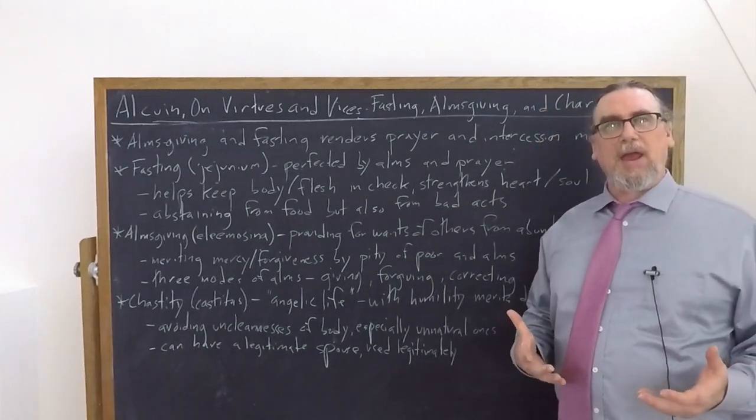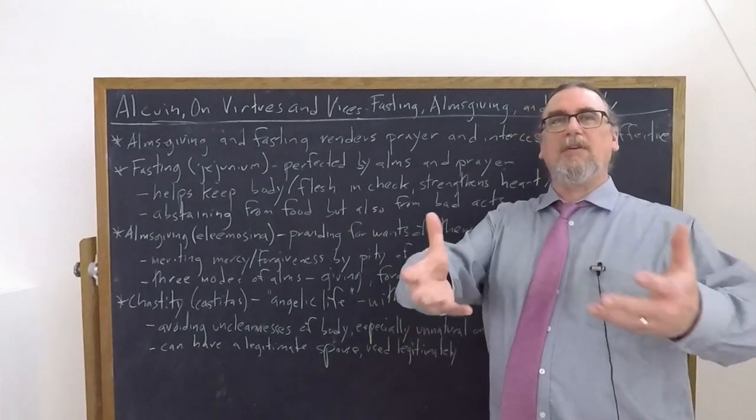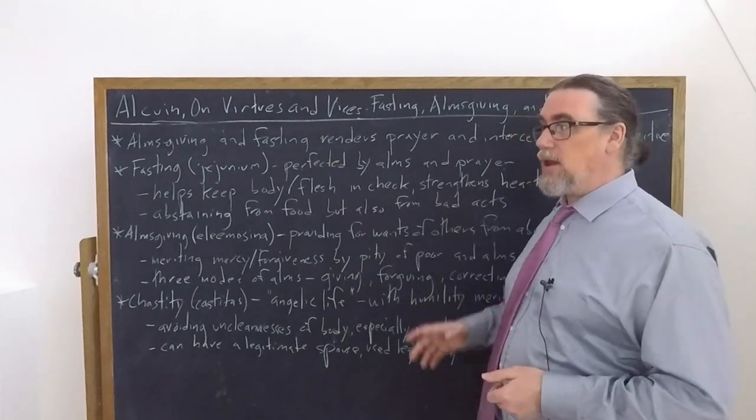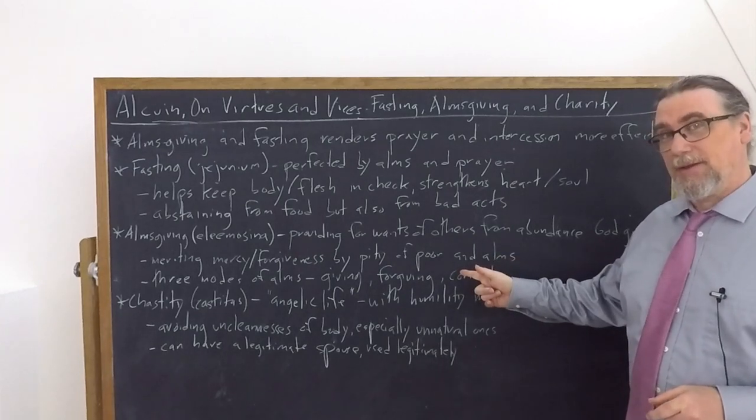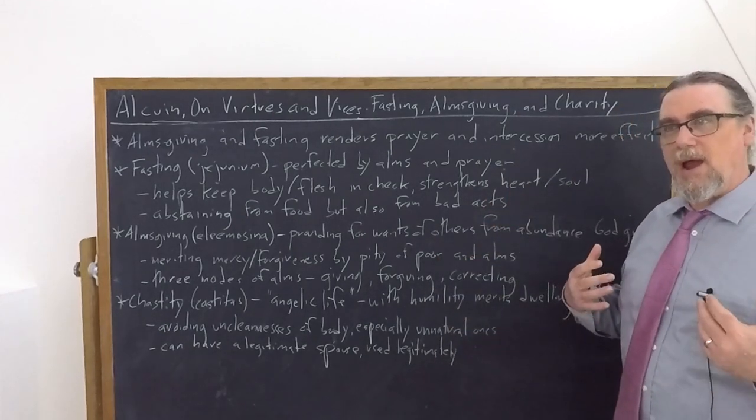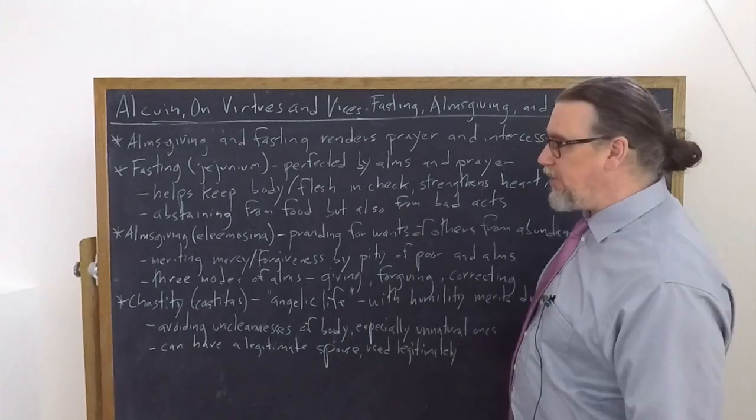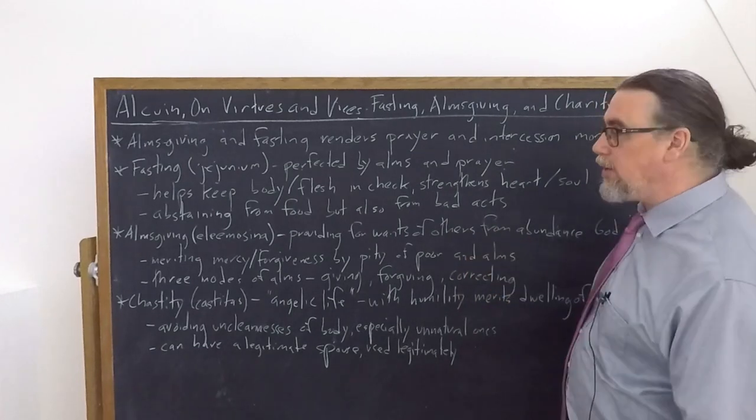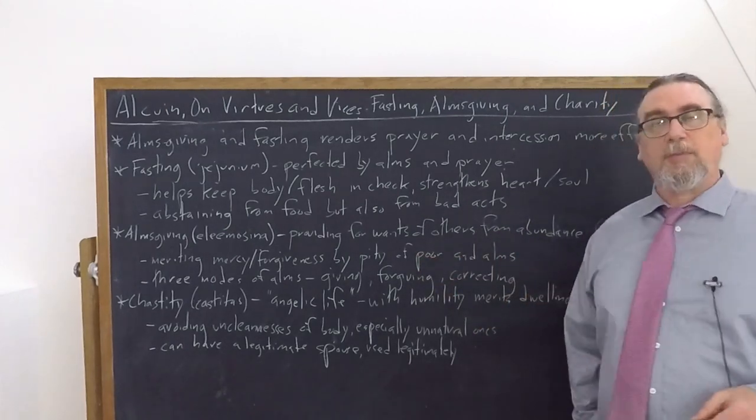He says there's actually three different ways in which we can give alms. This is very interesting. One is by corporeal giving to another person. It could be giving them food, giving them a ride somewhere where they need it, burying the dead. But it can also be forgiving. This is a spiritual way of giving alms. The third is to correct the delinquent and lead the erring back into the way of truth. So teaching, correction, admonition, exhortation, those might also be forms of alms giving.